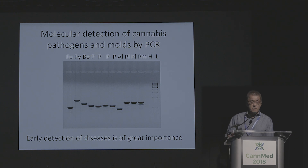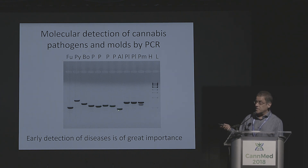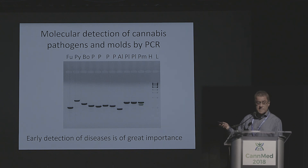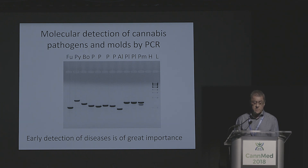We're also developing a molecular method using PCR to identify some of these pathogens. This straightforward PCR identifies various disease organisms — Fusarium, Pythium, Botrytis, four species of Penicillium, Alternaria, which is a disease just starting to emerge, and plant DNA. This unique banding pattern is powdery mildew; we can detect powdery mildew very consistently using this PCR test, which uses the ITS region. Early detection of disease is very important because growers can then manage possible outcomes.